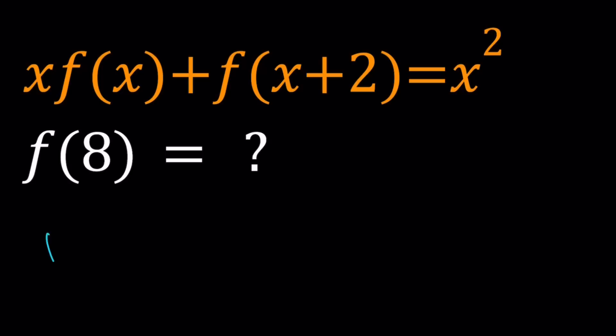For my first method, I'm going to make an assumption, and this may not be necessarily true. That's why I say I'm going to test this method out. Looking at this expression, f of x is multiplied by x, and then f of x plus 2 is added. So f of x and f of x plus 2 are kind of similar, except for the fact that you should shift the function two units, and the result is quadratic.